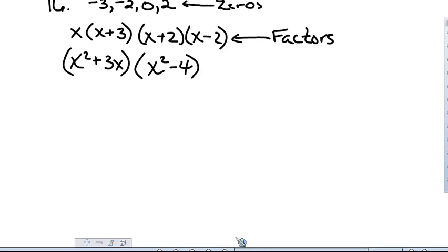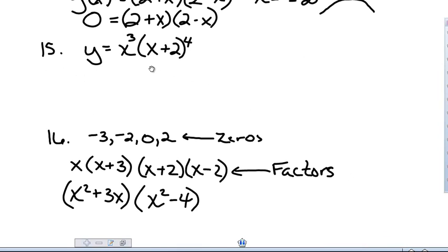Next number 15. You can see it's already factored. And we just need to find the zeros now of this function. So we will set this equal to zero. And we will see that we have some zeros at negative 2 and at zero itself.